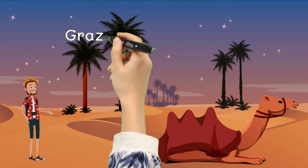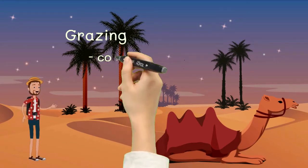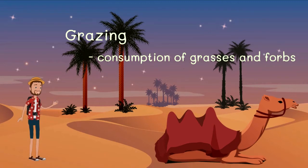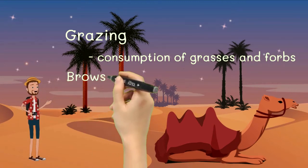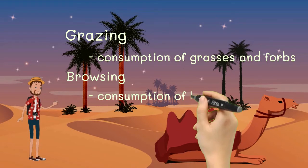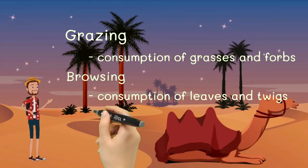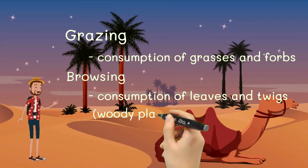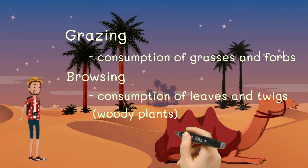Grazing is the consumption of standing forage, edible grasses, or forbs by the livestock. And browsing means it is the consumption of edible leaves and twigs from woody plants, especially trees and shrubs. The difference here is the type of plant the animal is consuming. So when the animal only eats grasses and forbs, it is called grazing, and if the animal eats leaves and twigs from woody plants, it is called browsing.